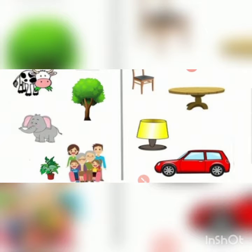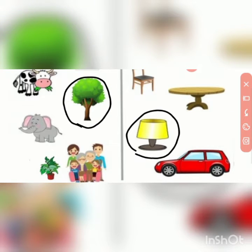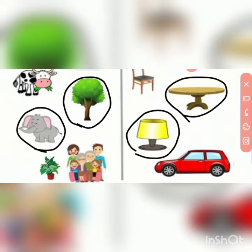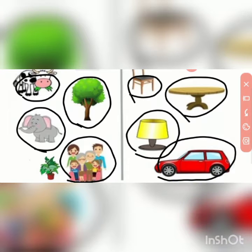Here there is a picture and you can see many things in the picture. Can you name them? Yes, very good. What is this? A table lamp, a tree, an elephant, a table, a cow, a chair. Here there is a family, a car, and a plant.